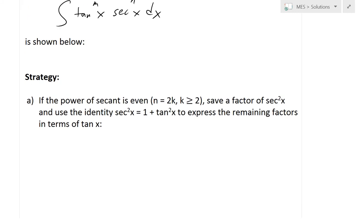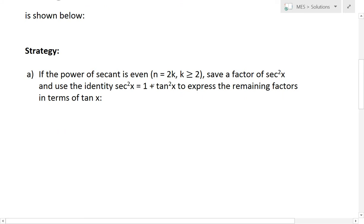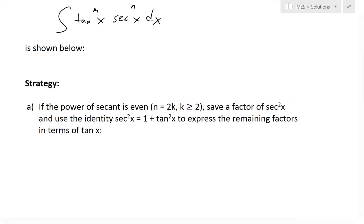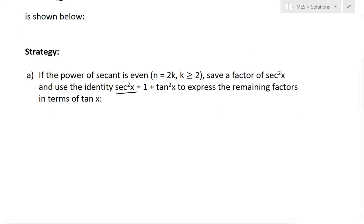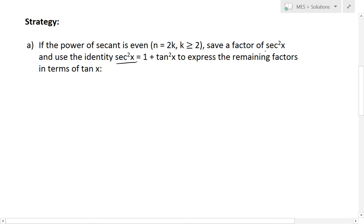The first part of the strategy is: if the power of secant is even, in this case n = 2k where k ≥ 2, save a factor of sec²x and use the identity sec²x = 1 + tan²x to express the remaining factors in terms of tan x. Note that k ≥ 2 because if k = 1 and n = 2, that's just secant squared of x and we wouldn't need to save a factor.